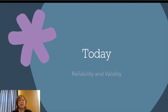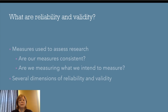Today we're going to talk about reliability and validity of measures, as opposed to reliability and validity of studies. Reliability means are our measures consistent, predictable, and dependable? Validity asks whether we're actually measuring what we intend to measure. These are related but not identical concepts — a measure can be reliable but not valid, and a measure can be valid but not reliable.